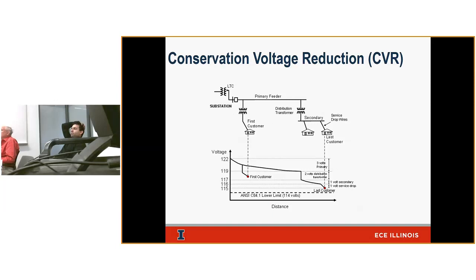That leaves a little bit of drop for the primary before you start getting into the violation range. So we're talking about maybe 6 to 7 voltage points or volts that you can drop across the system before seeing any violations.